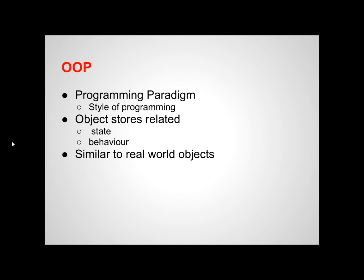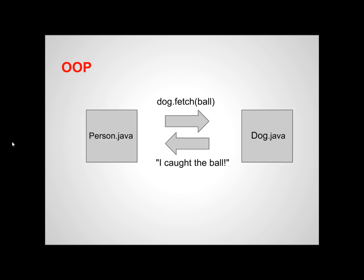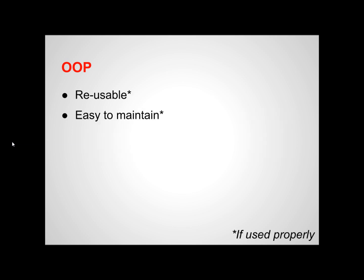Java is an object-oriented programming language, usually abbreviated as OOP for short. Object-oriented programming is a programming paradigm, meaning it's a style of programming. In object-oriented programming, we put related state and behavior into entities known as objects. This is very similar to the real world, where you can think of things like a person or a dog as objects — they have states like awake and hungry, and behaviors like walk and bark. These objects can also communicate with each other, allowing them to interact and leverage each other for certain functions unique to that class. If used properly, this can lead to reusable and easy-to-maintain code.